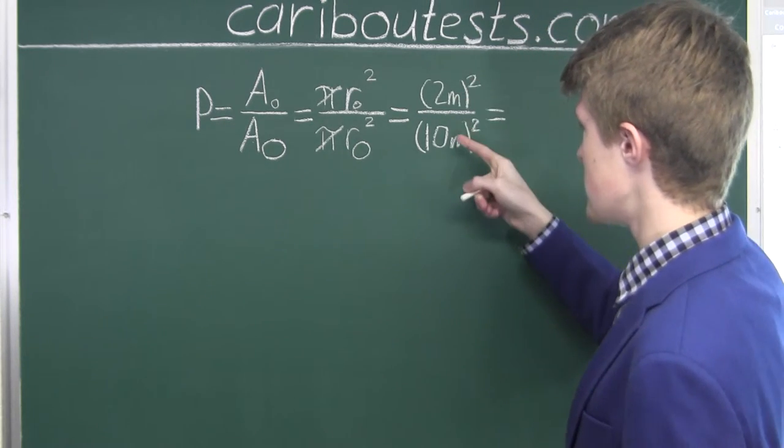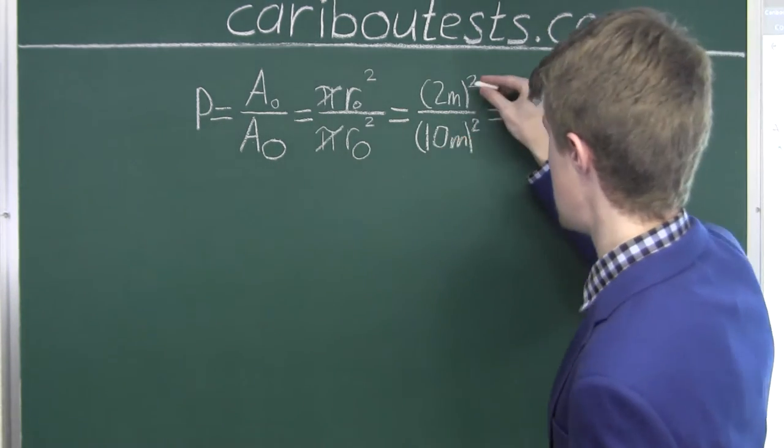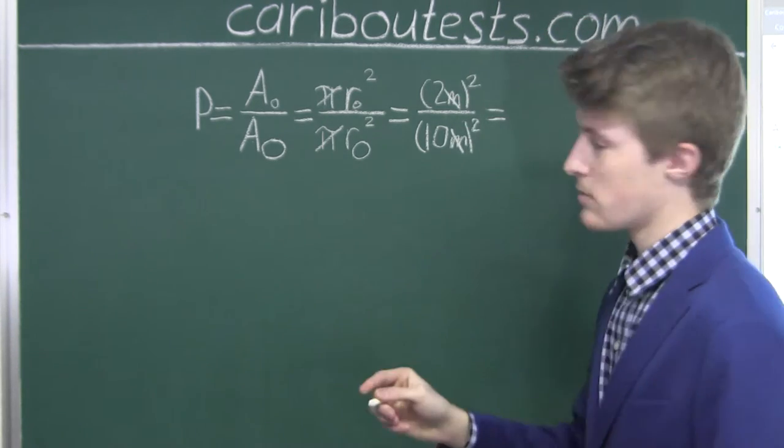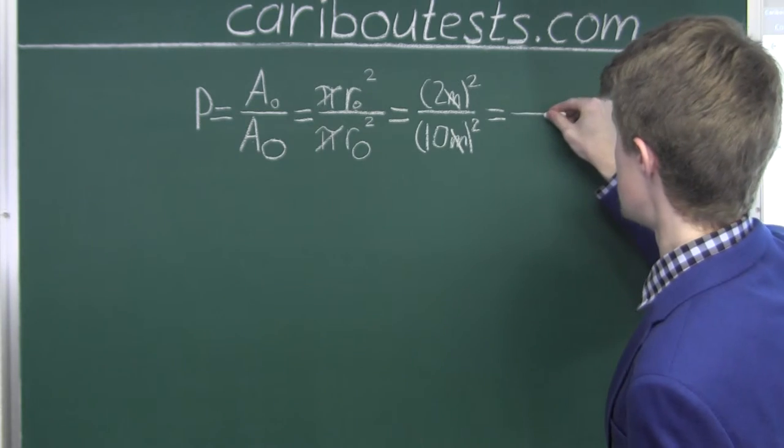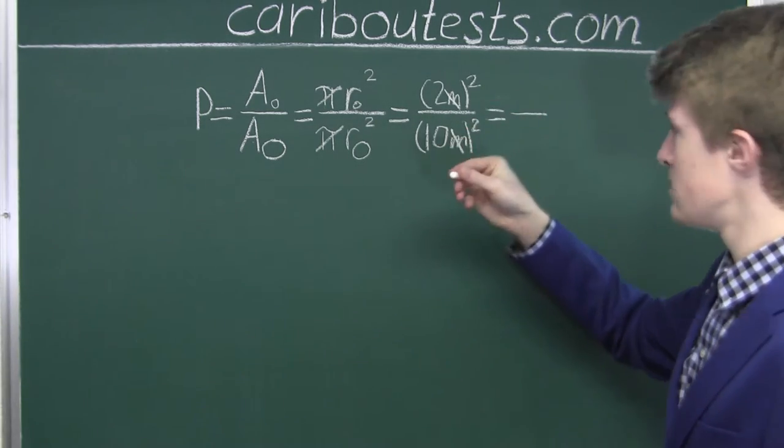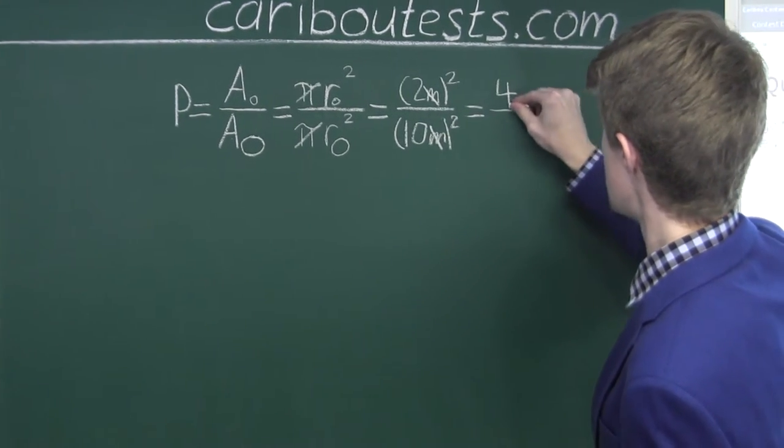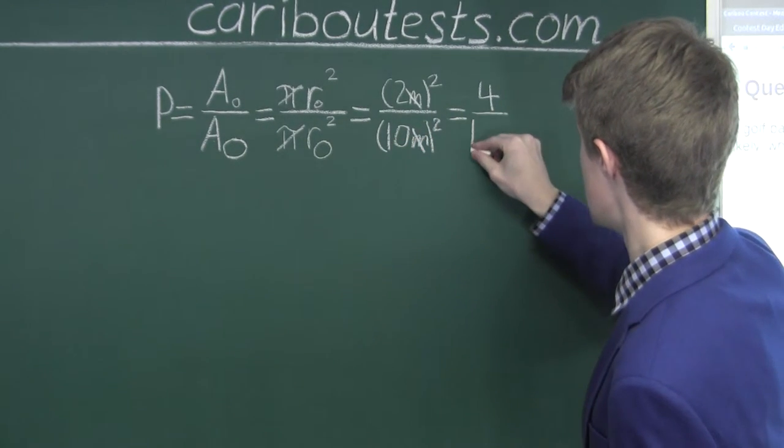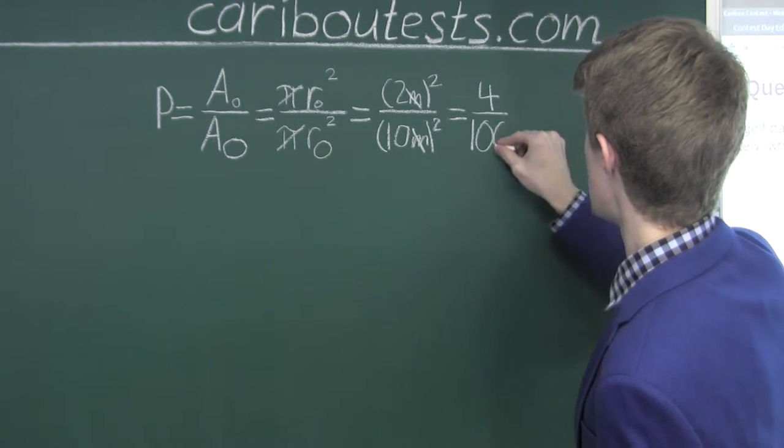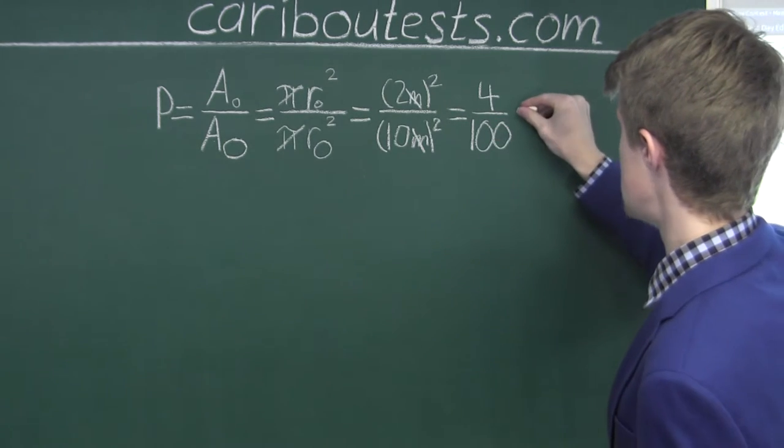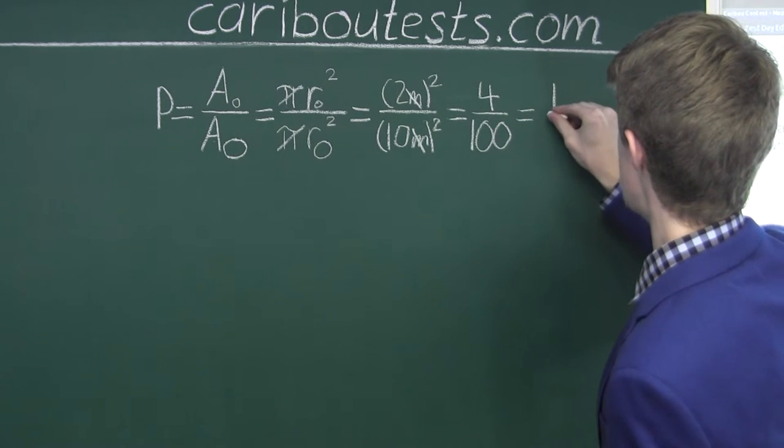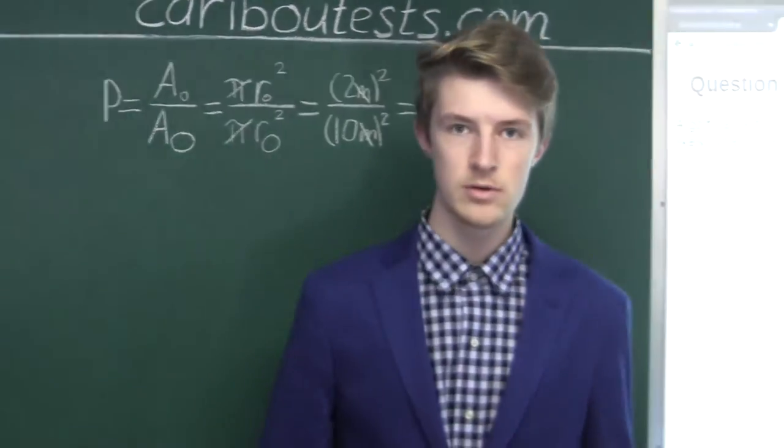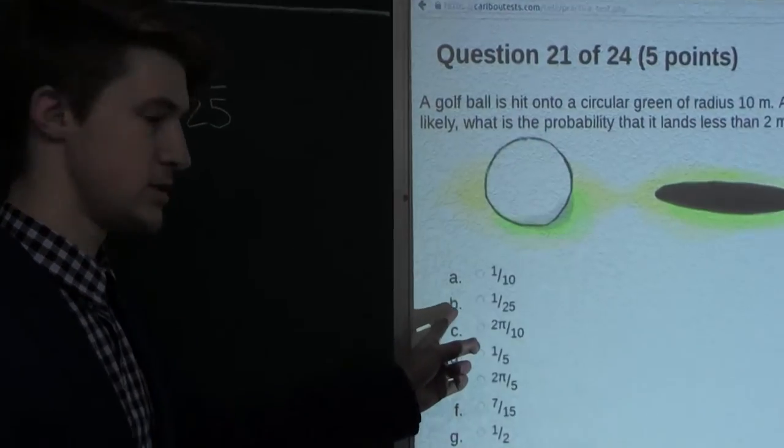Now we have meters squared divided by meters squared, so that cancels out. And what we are left with is 2 squared in the numerator, which is 4, and 10 squared in the denominator, which is 100. So 4 divided by 100 is equal to 1 over 25. And 1 over 25 would be option B.